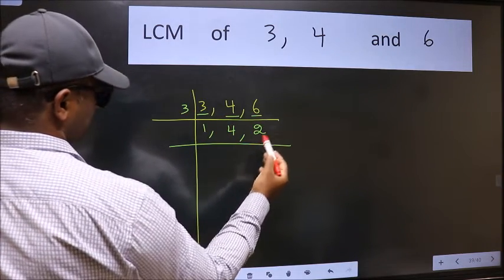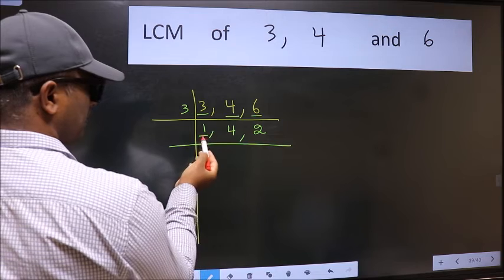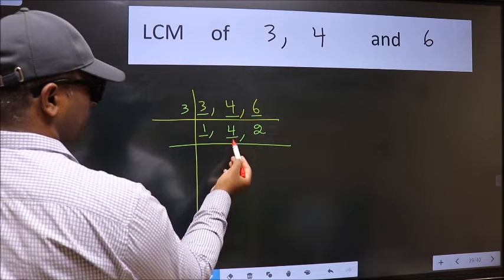3 times 2 is 6. Now we got 1 here so focus on to the next number 4.